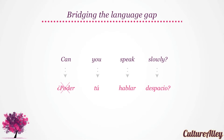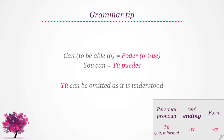But we cannot use poder as it is. Can, or to be able to, is poder, and it changes its spelling — the middle O changes to U-E. Therefore, you can becomes tú puedes. Tú puedes, or you can.